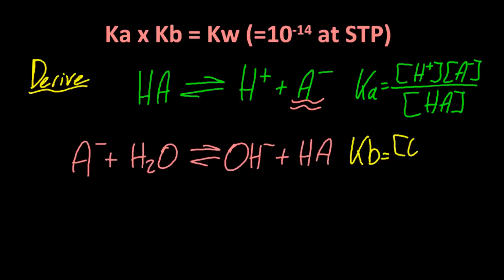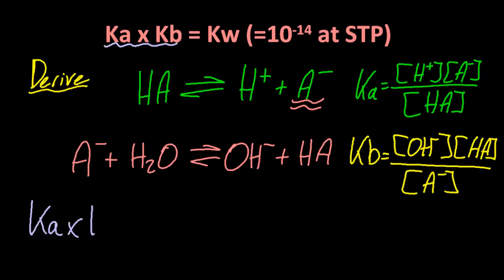So that gives me the Ka and the Kb in question. One for the acid, and one for its conjugate base. Let me multiply them together.